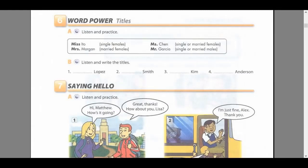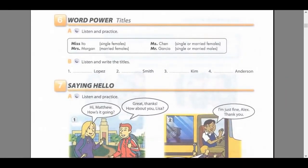Page 4, Exercise 6, Word Power: Titles. Part A: Listen and practice. Miss Ito: single females. Mrs. Morgan: married females. Ms. Chen: single or married females. Mr. Garcia: single or married males. Part B: Listen and write the titles. His name is Mr. Lopez. Her name is Mrs. Smith. Her name is Miss Kim. Her name is Ms. Anderson.